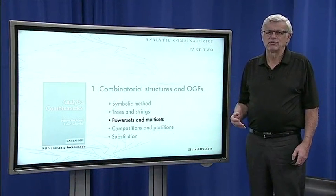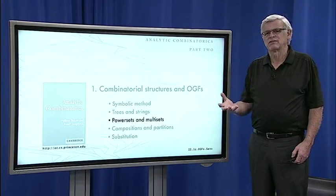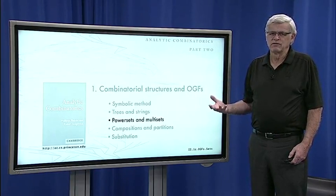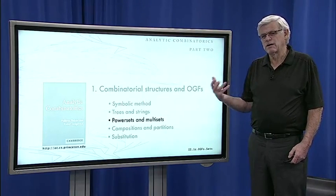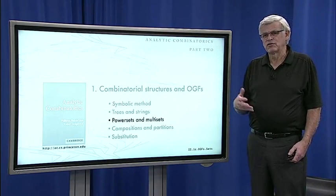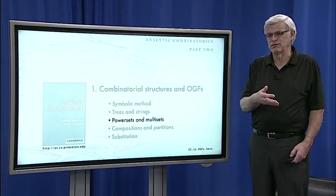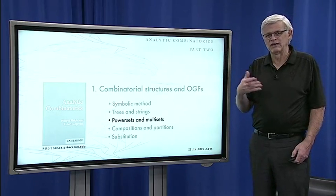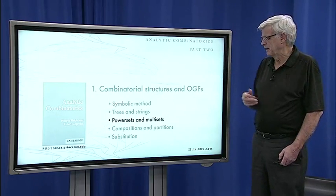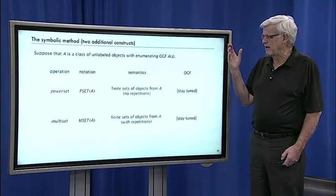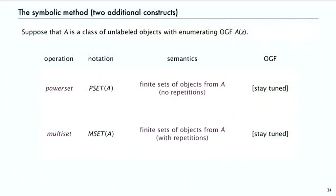Now we're going to look at combinatorial constructions where we take subsets of objects in combinatorial classes to build up new classes. These constructions are more complicated — we didn't cover them in part one. In the lectures, we'll work at a level in between part one and the purple book, where these theorems are stated and proved in a few lines. We're going to look at two additional constructs: the power set operation and the multi-set operation.